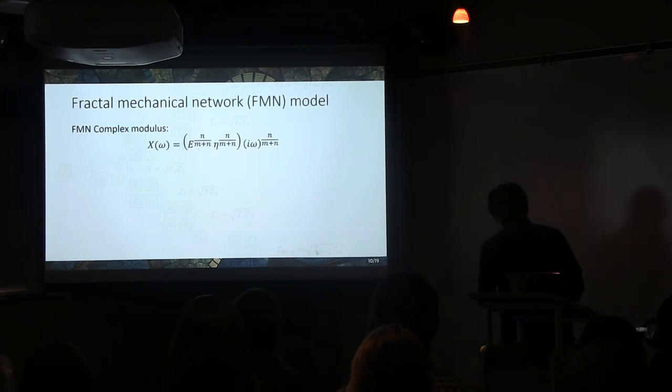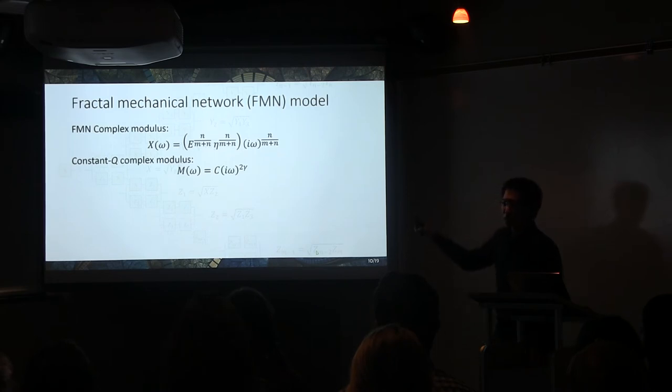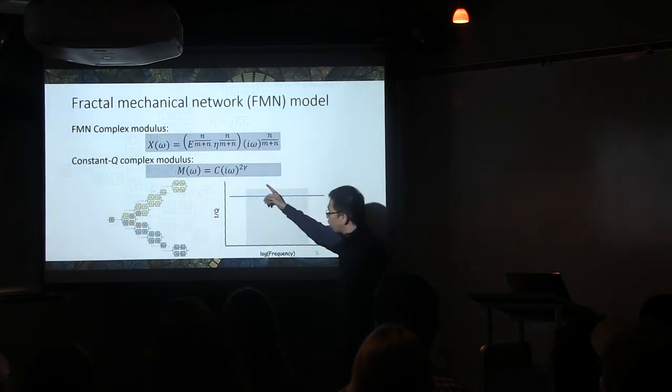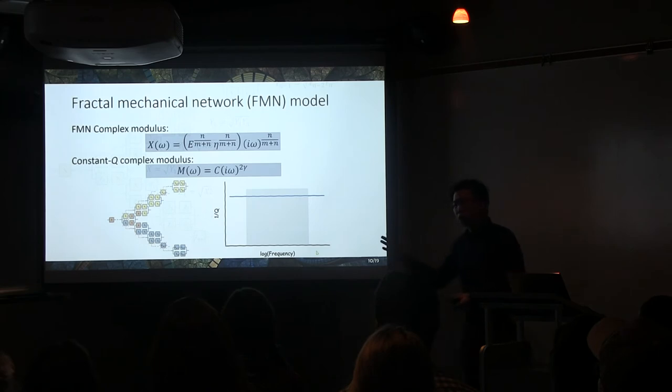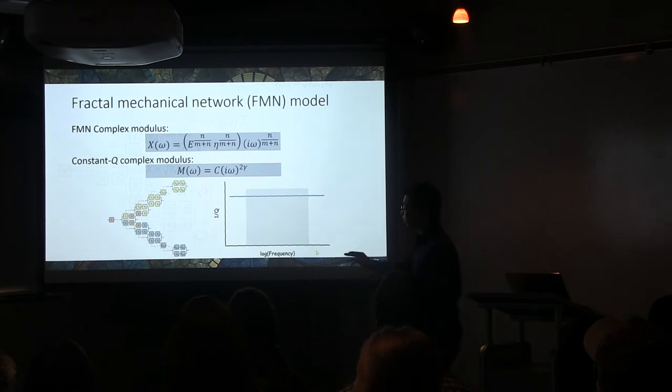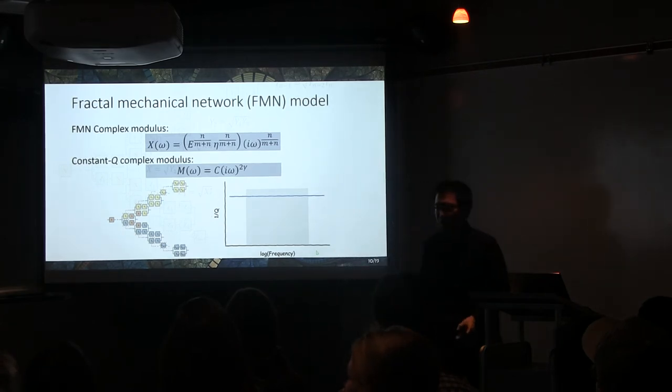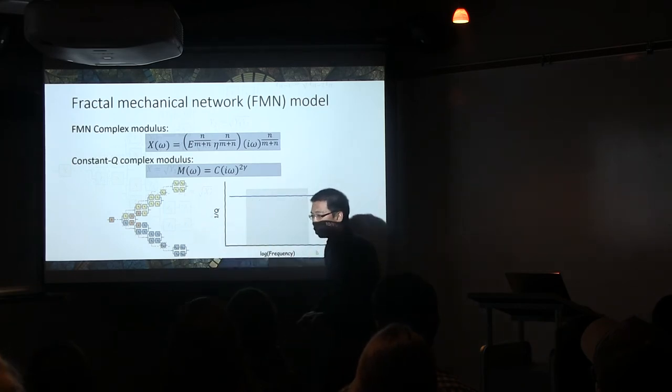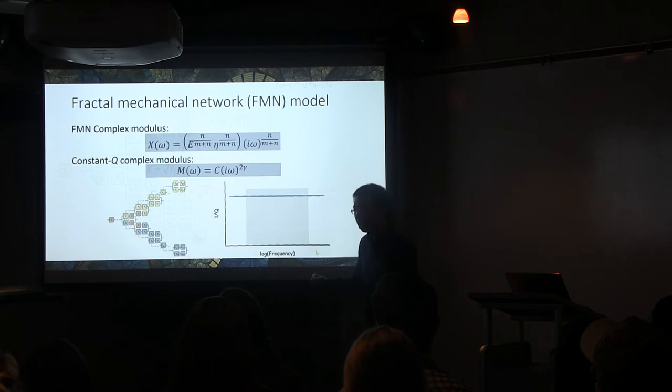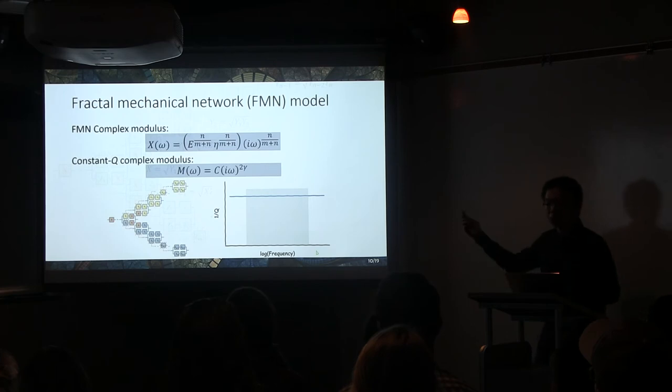Now, we recall that in this mathematical constant Q model, we have complex modulus in this form. You guys might have found the gap right here. By comparing these two, we can see that for an arbitrary gamma, which corresponds to an arbitrary Q, as long as gamma is a rational number, we can always find two integers, M and N, such that these two moduli are equivalent to each other. In other words, this fractal mechanical network model can produce the attenuation behavior of any constant Q model. So, in this way, we basically provide a physical motivation to this mathematical model.